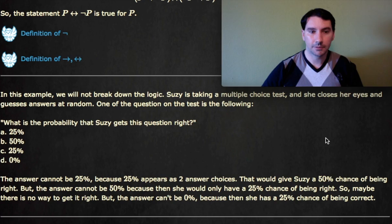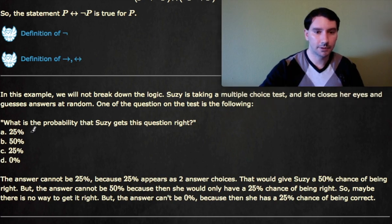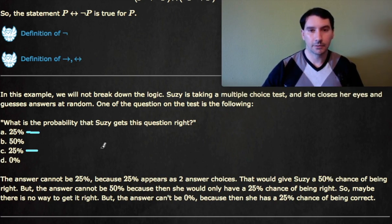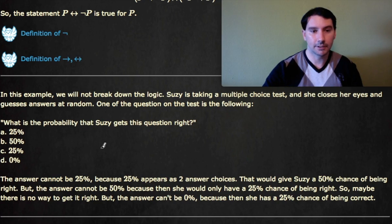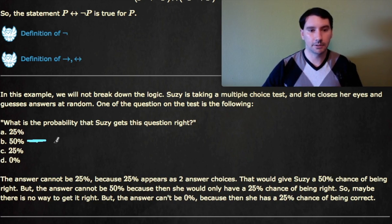But if 25% was the answer, there's a 50% chance she's going to get it right, because she could guess A or she could guess C. So then you might think, okay, so there's a 50% chance she gets it right. Well, if you said 50% chance, that means she'd have to guess B to get it right, which means that there's actually only a 25% chance that she gets the question right.